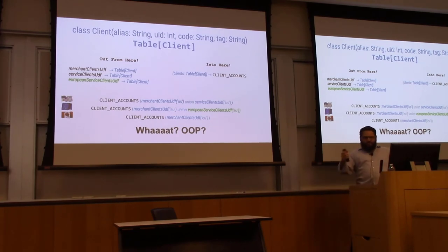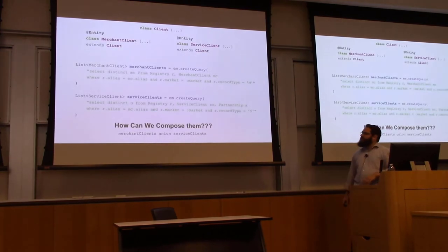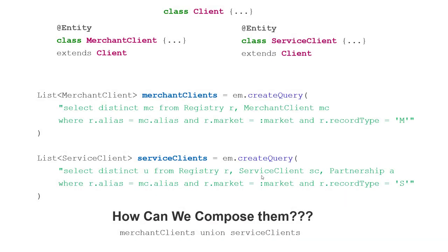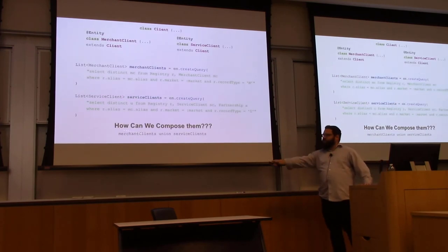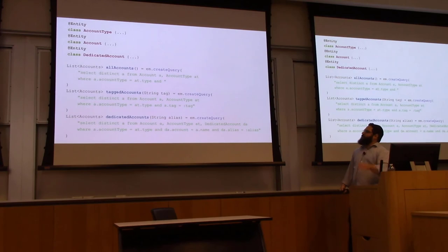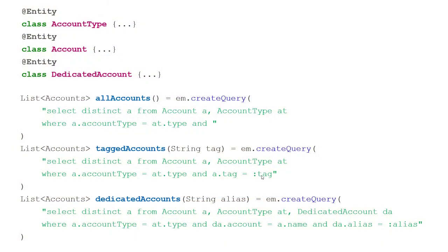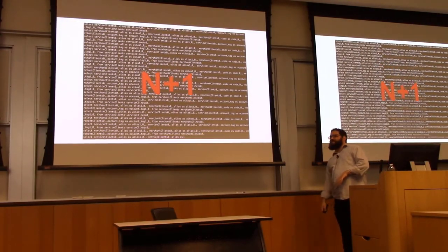So at this point, everybody says: object-oriented programming and databases? This is ORM, right? This is Hibernate. Let's use Hibernate. Let's make a client that's the super class of our merchant and service clients. Let's have our JPQL queries that get them like this. And then we need our union—well, how do you make a union of two JPQL queries? You can't. You use a for loop. Here are all of the other tables we need, and we have JPQL for all of them, and we put them all together in some horrific structure. We've taken everything, loaded it up into our tables—and then this happens.